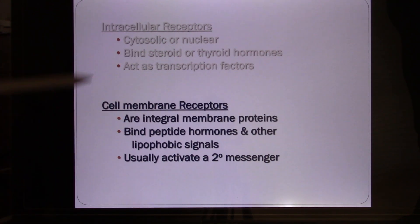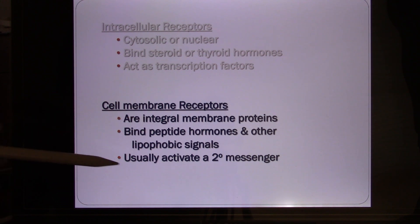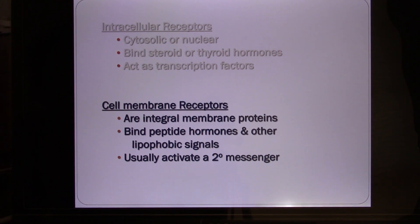So we talk about the membrane receptor. They are for peptide hormones and other lipophobic signals. They usually trigger the second messenger system.